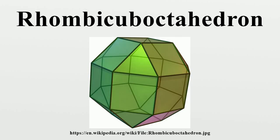Vertex arrangement: The rhombic aboctahedron shares its vertex arrangement with three non-convex uniform polyhedra: the stellated truncated hexahedron, the small rhombihexahedron, and the small cubical aboctahedron.